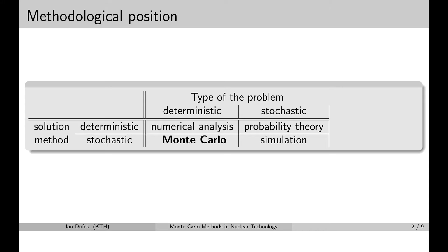In order to understand what the Monte Carlo method is, let me first divide all possible problems into two groups: the group of deterministic problems and the group of stochastic problems. The deterministic problems are those for which we know the solution without any uncertainty, while the stochastic problems have a solution that can be expressed only in terms of the mean value associated with some kind of stochastic deviation. Typically this happens when the solution contains some noise or fluctuations.